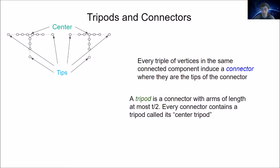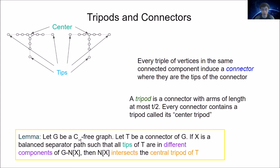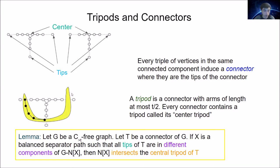Every connector contains a tripod — specifically its center tripod: look at the center and the paths of length t/2 emanating from it. The key lemma motivating tripods says: if T is a connector of G and X is a balanced separator path such that all three tips of T lie in different components of G minus the closed neighborhood of X, then the closed neighborhood of X must intersect the central tripod of T.